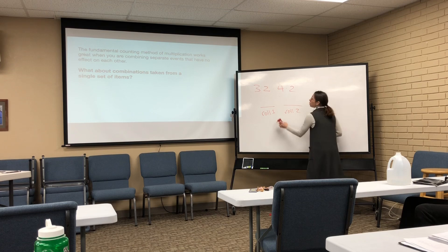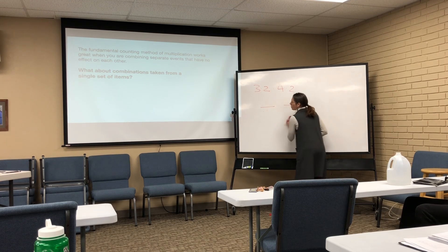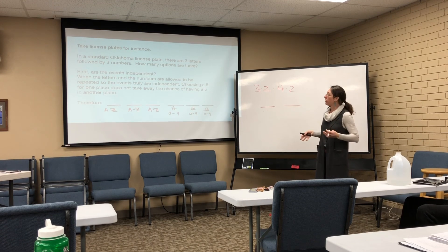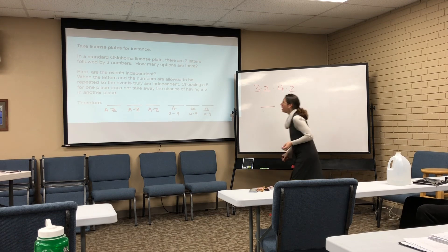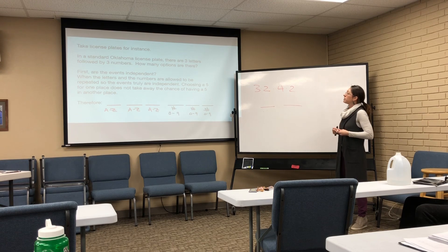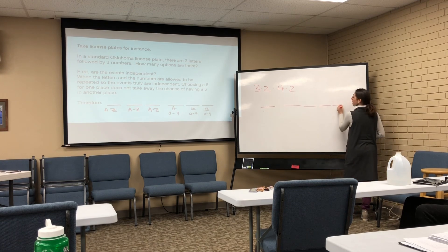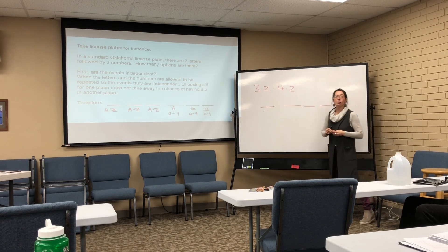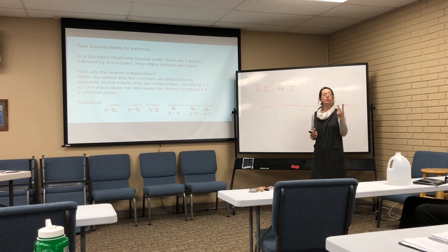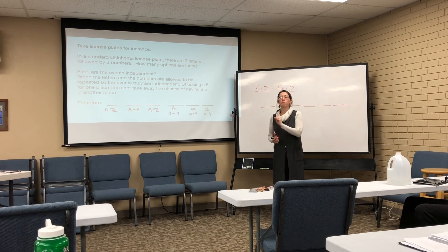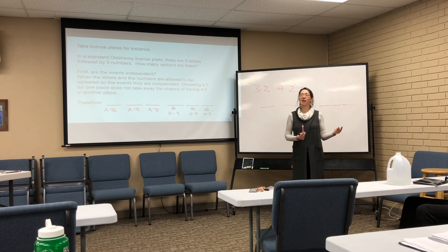So what about combinations taken from a single set of items, just like we had with the candy bars? A great example is license plates. In Oklahoma, a standard plate has three letters up front followed by three numbers. There are two different ways to address this, and we need to know on the front end: are the options repeatable or are the options not repeatable?